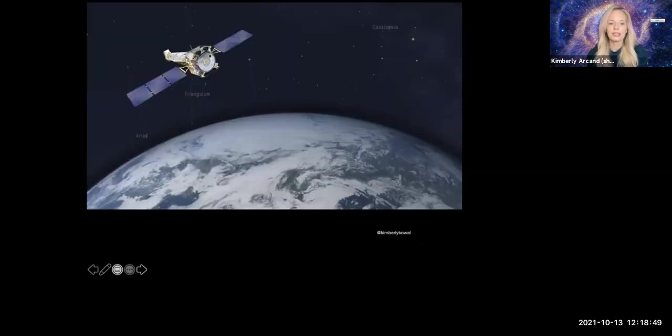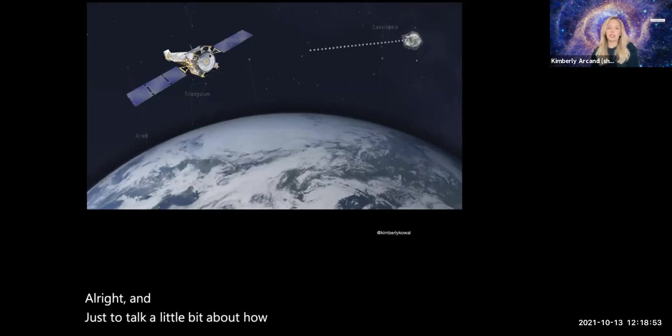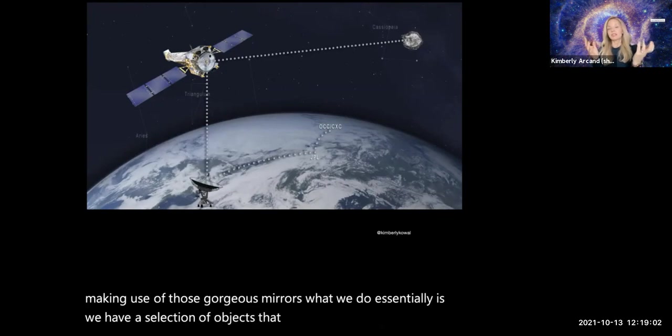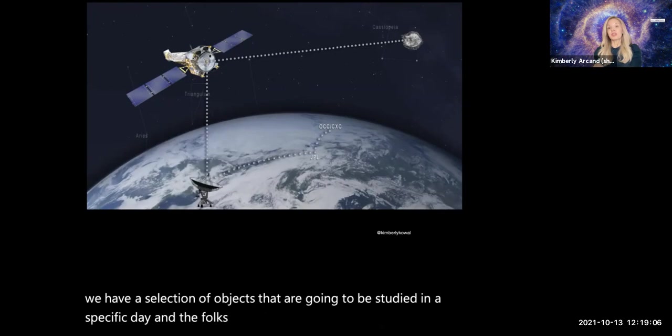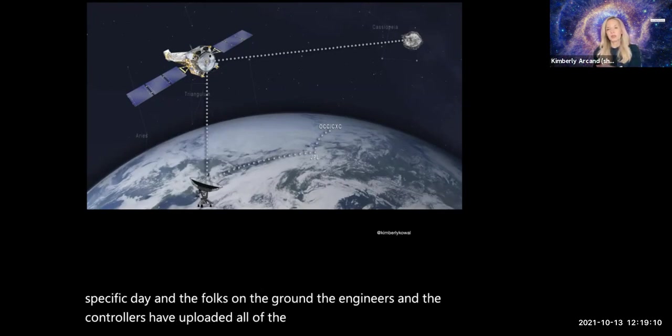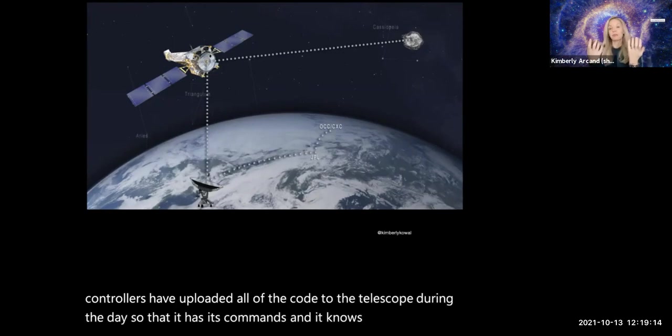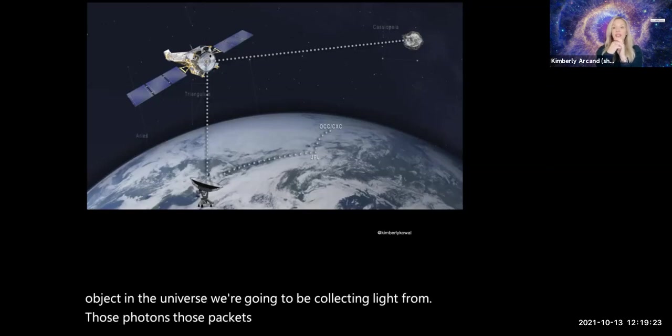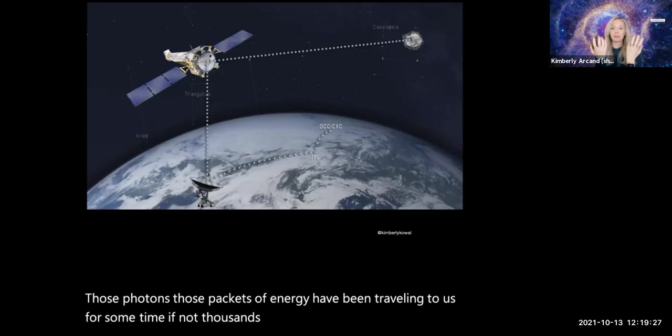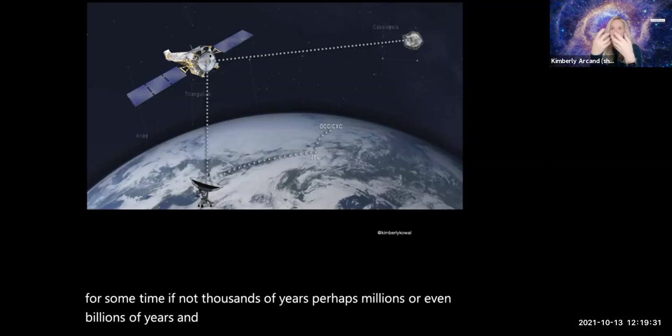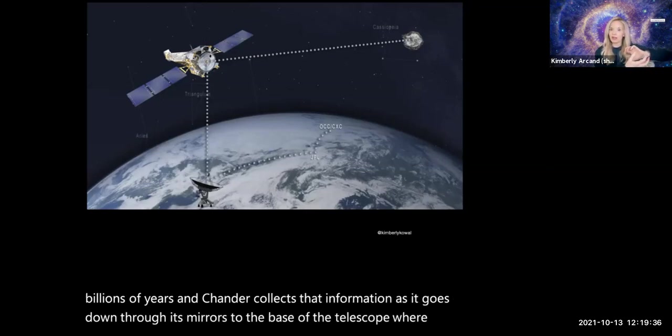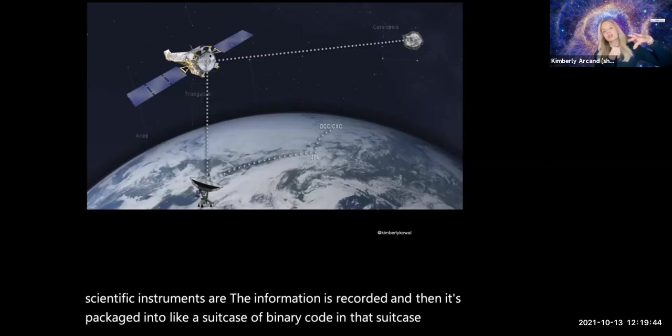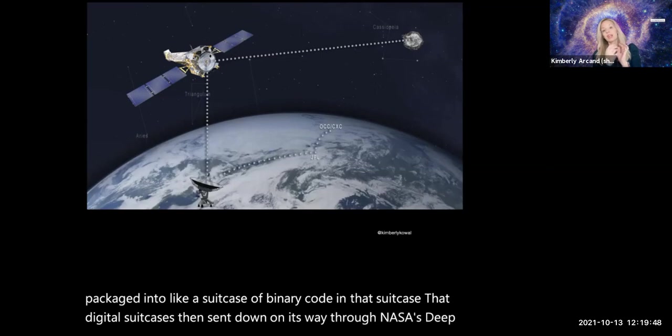Just to talk a little bit about how we capture data with Chandra, what we do essentially is we have a selection of objects that are going to be studied in a specific day. Chandra is slowly pointed at whatever object in the universe we're going to be collecting light from. Those photons, those packets of energy have been traveling to us for some time, if not thousands of years, perhaps millions or even billions of years. The information is recorded and then it's packaged into like a suitcase of binary code.